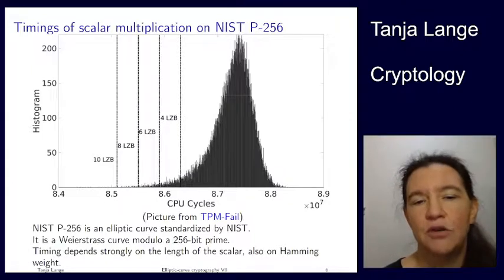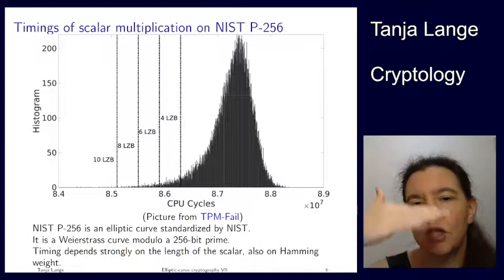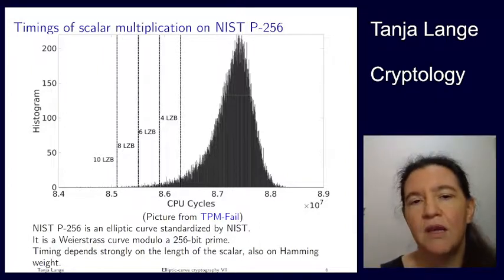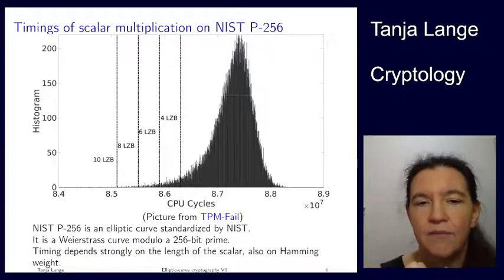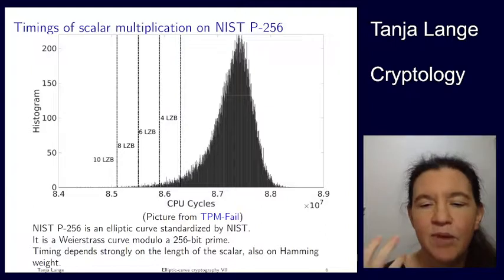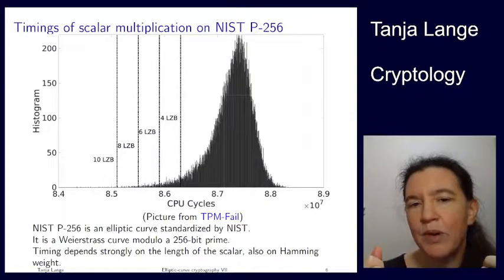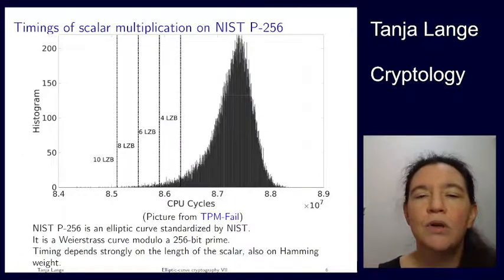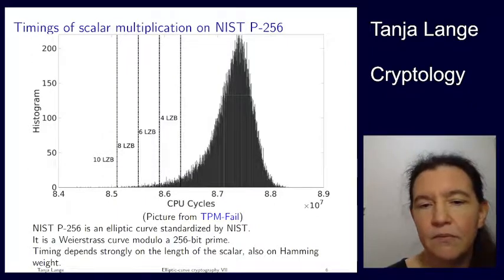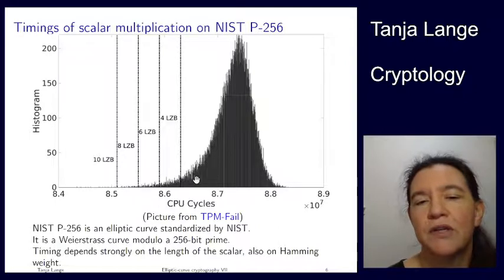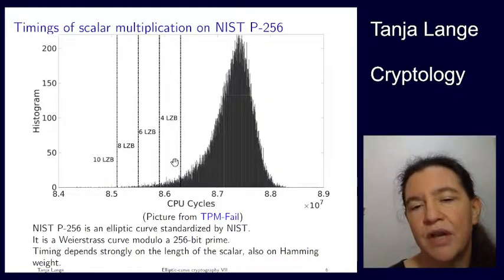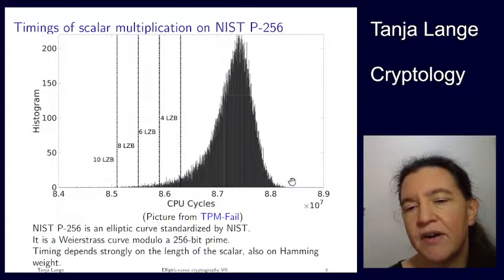It doesn't always have to be just leading zero bits. Another case that runs faster is when essentially all addition steps are skipped — i.e., when the bit pattern of A has many zeros. The Hamming weight of a bit string is defined as the number of 1 entries. If the Hamming weight of the bit string A corresponding to the scalar is particularly low, you also end up as a fast outlier. An unusually high Hamming weight puts you at the far right of the distribution.